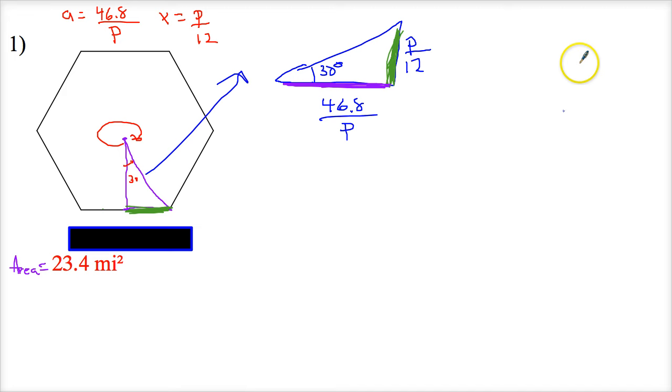It's tangent, right? So tangent of 30 degrees is equal to opposite, which would be P over 12, divided by adjacent, 46.8 over P.